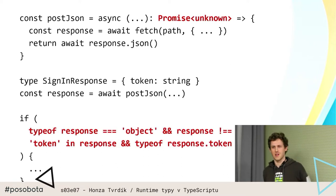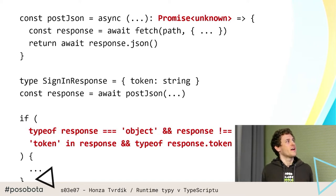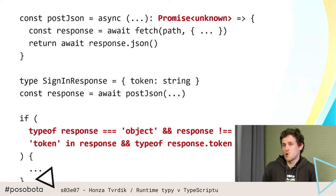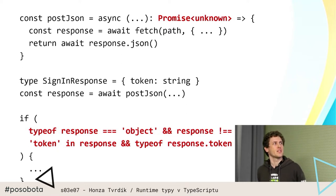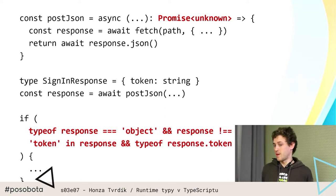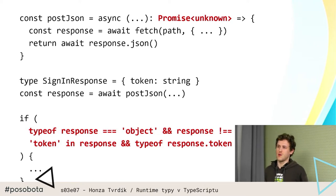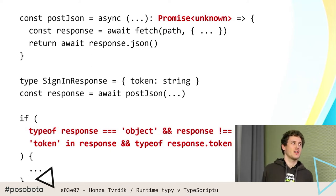Takže to, co je actually potřeba udělat, aby to bylo typesafe: v první řadě fixneme to, že response.json() z fetch by default vrací any — což je ten zdroj toho problému. Takže my explicitně to overrideme, řekneme, že to tedy není Promise of any, ale Promise of unknown. Tak už toho, co to uděláme, tak najednou TypeScript říká, že all to be unknown — to je najednou jakoby velká neznáma, není bezpečné dělat v podstatě nic.